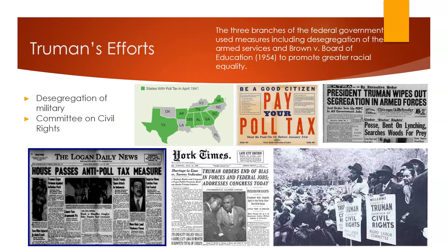The president followed through on what he could, signing an executive order in 1948 eliminating racial segregation in the armed forces, although it didn't go into effect until 1950. He encouraged Congress to also get involved. Eventually, Congress proposed the 24th Amendment, which would outlaw poll taxes in federal elections — it was ratified in 1964. And in 1966, the Supreme Court joined in and outlawed poll taxes in state elections.